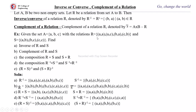Given A={a,b,c} and R={(a,a),(a,c),(b,a),(c,b)}, and S={(a,b),(b,c),(c,c)}, find the inverse of R and S. The inverse is obtained by interchanging the first and second elements of each ordered pair. So R⁻¹={(a,a),(c,a),(a,b),(b,c)}. Likewise, you can find S⁻¹.